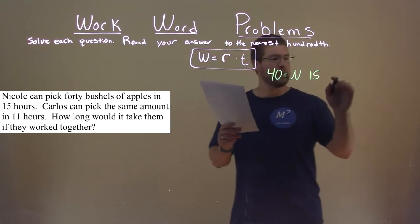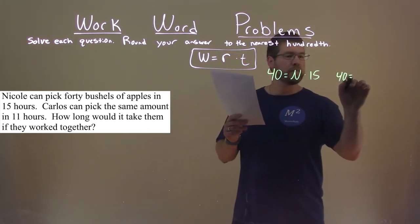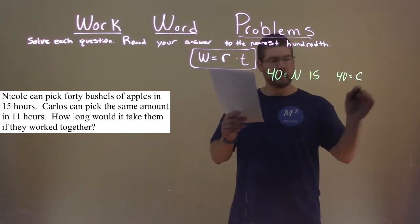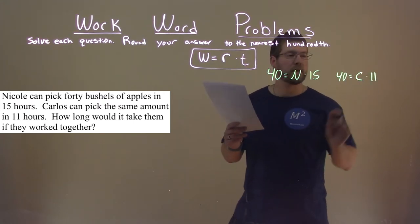They tell us that Carlos can pick the same amount, so 40 equals Carlos's rate, which we don't know, times his time, 11 hours.